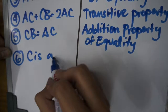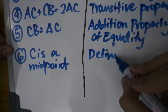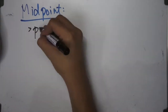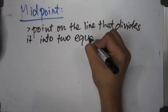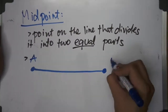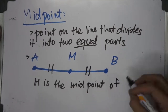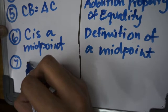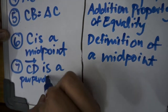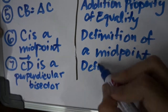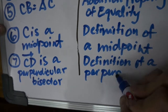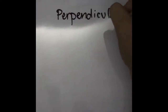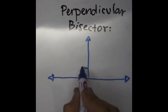We can now state that C is a midpoint, due to the definition of a midpoint. A midpoint is a point on the line that divides the line into two equal parts. Lastly, we can state that CD is a perpendicular bisector. This is due to it fulfilling the conditions for it to be a perpendicular bisector, as stated in its own definition.